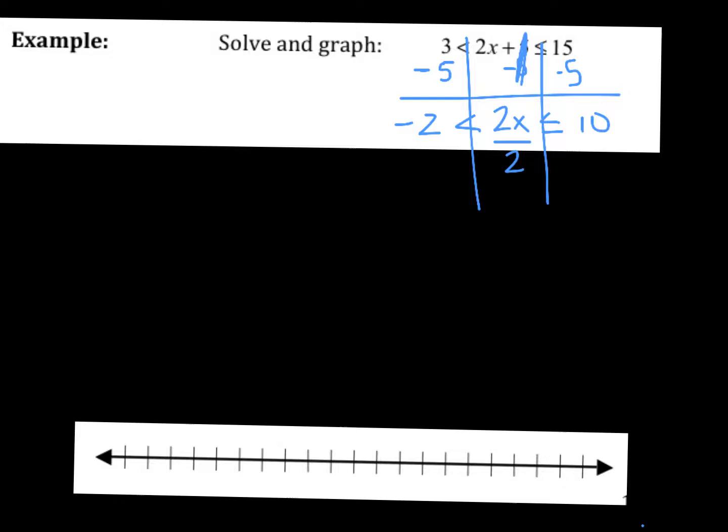2x less than or equal to ten. Divide by two in the middle. Divide by two on the outsides. Negative two divided by two is negative one, less than 2x divided by two is just x, which is what we want. Less than or equal to ten divided by two is five. So that's our inequality.